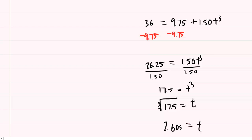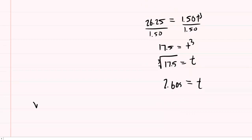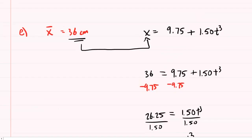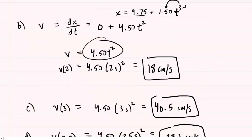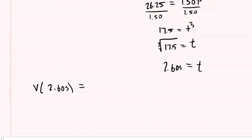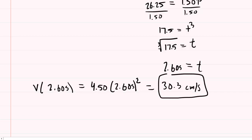So that's our time. The question wanted the instantaneous velocity, so we're going to plug that time into our instantaneous velocity equation, which we had found was 4.50 t squared. So we'll have 4.50 times 2.6 seconds squared. When you work this out, you are going to get roughly 30.3 centimeters per second. So this would be the correct answer to part E.